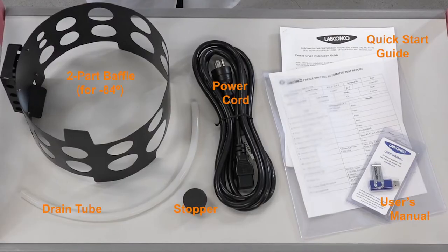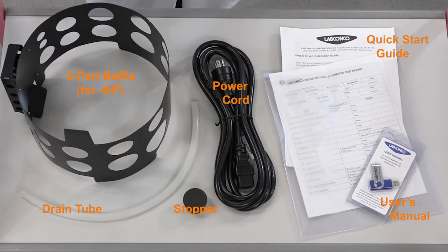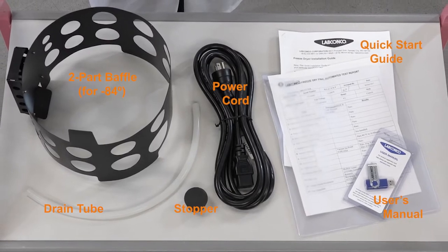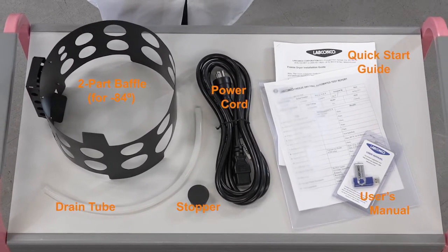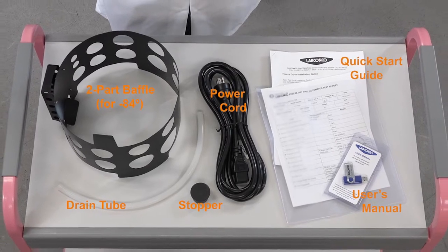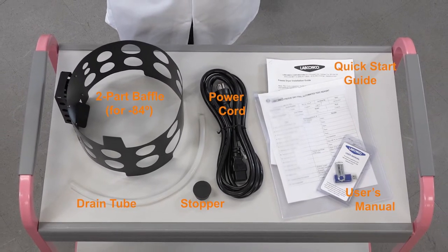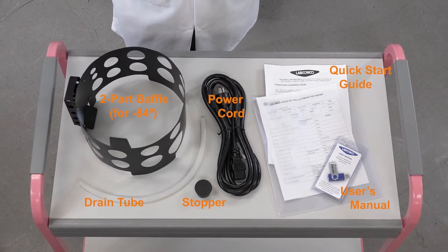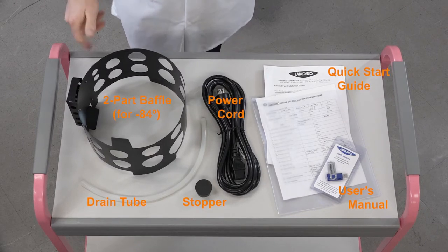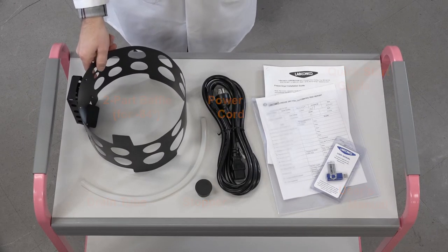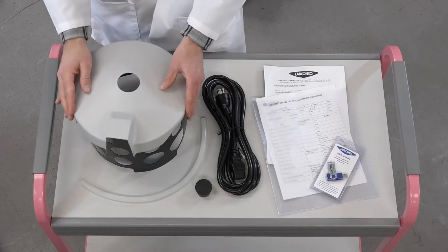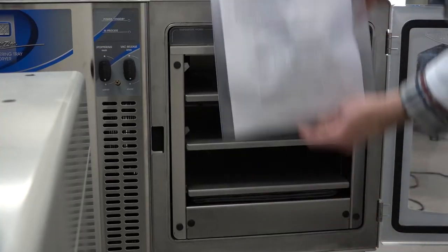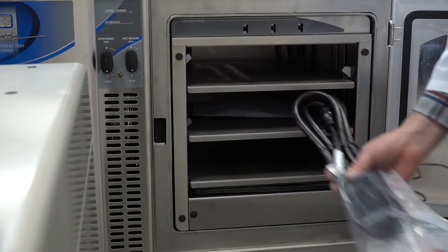You can pause the video on this image for a quick reference of the parts list. The list may be slightly different for some models, so please cross-reference with your user's manual. If the Freezone's condenser is colder than negative 50 degrees or it's an 18 liter, your parts list should include a baffle. Larger accessories may come with a separate manual and parts list as well.